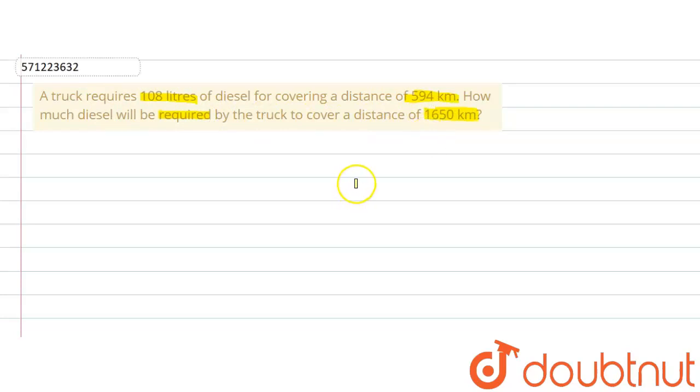We are supposed to find out the amount of diesel required to cover this distance. First of all, we are given that the distance of 594 kilometers requires 108 liters of diesel.